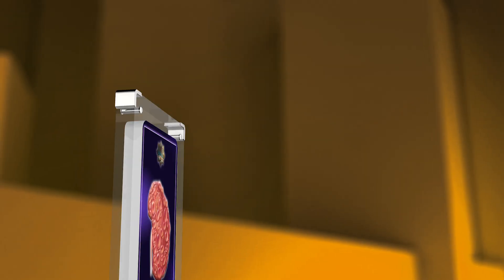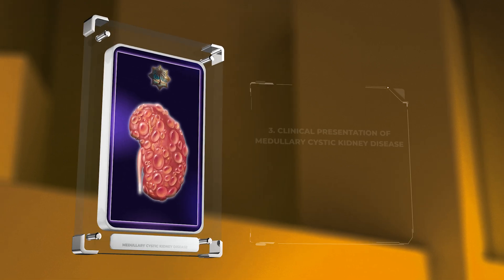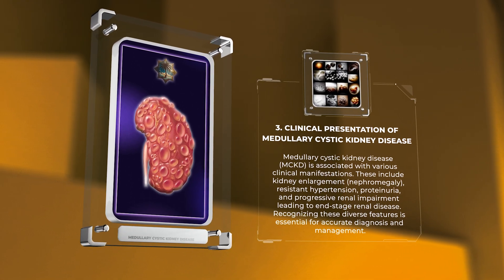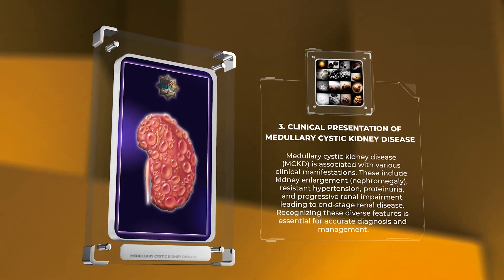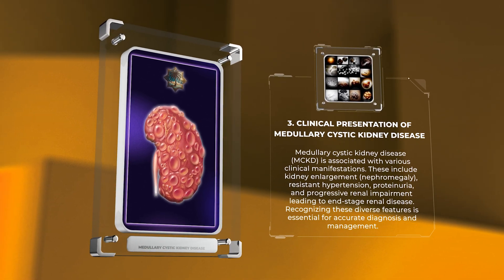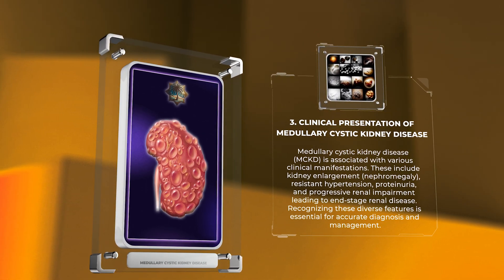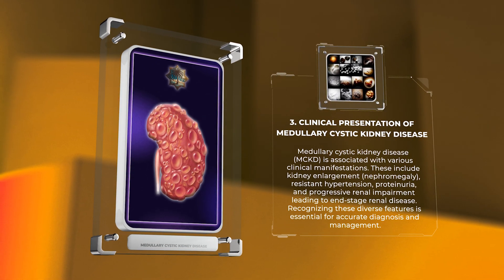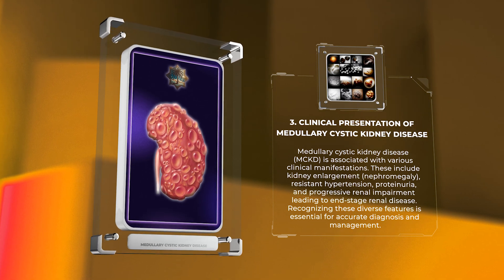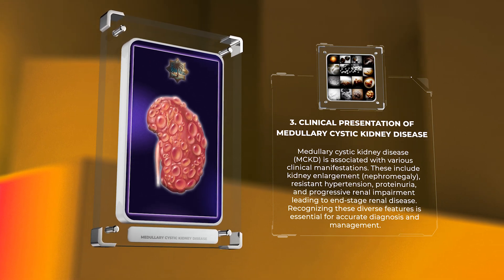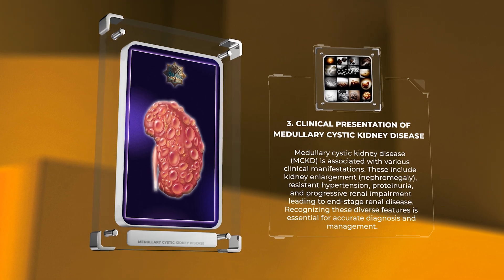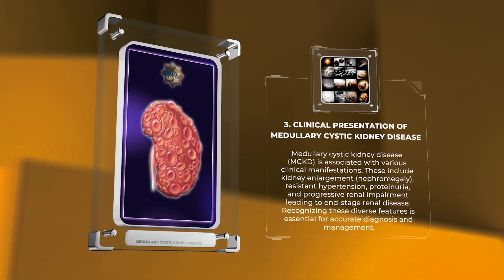Medullary Cystic Kidney Disease is associated with various clinical manifestations. These include kidney enlargement (nephromegaly), resistant hypertension, proteinuria, and progressive renal impairment leading to end-stage renal disease. Recognizing these diverse features is essential for accurate diagnosis and management.